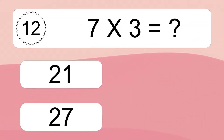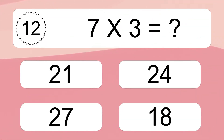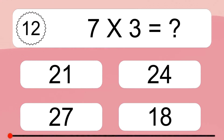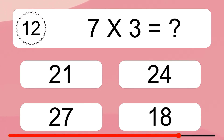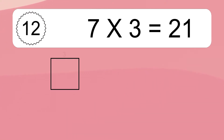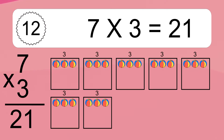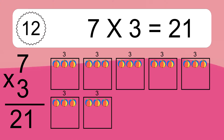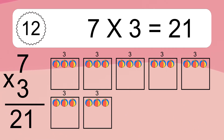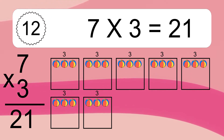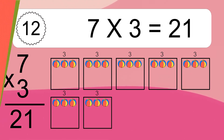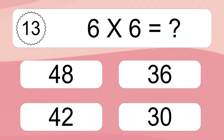7 times 3 equals what? 7 times 3 equals 21. We have 7 boxes, and each box has 3 colorful balls inside. If you count all the balls in all the boxes together, you will have 7 times 3 balls. This equals 21 balls.